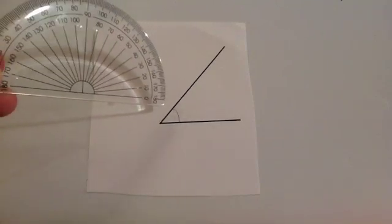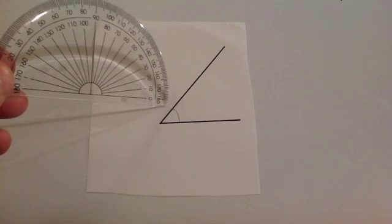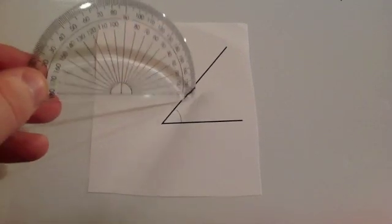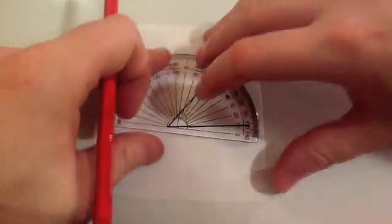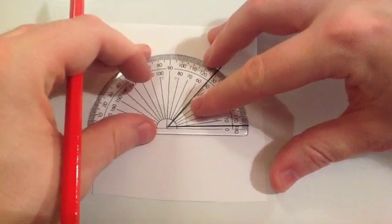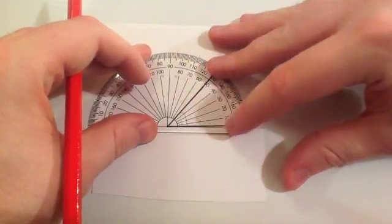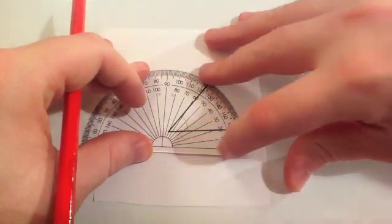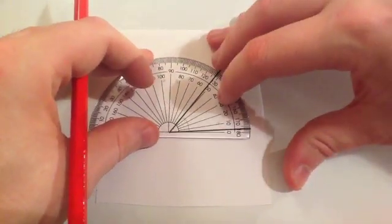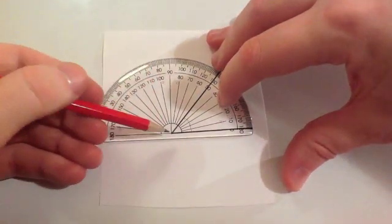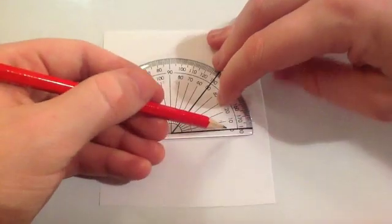Whenever you are measuring an angle, first of all just double check which part they want to measure. As you can see here it has got the arc, so we need to measure inside this part here. Put your cross of your protractor on the point and then put the zero on the line. Put that line at the bottom along the angle. I have got the cross there and the zero on the line.